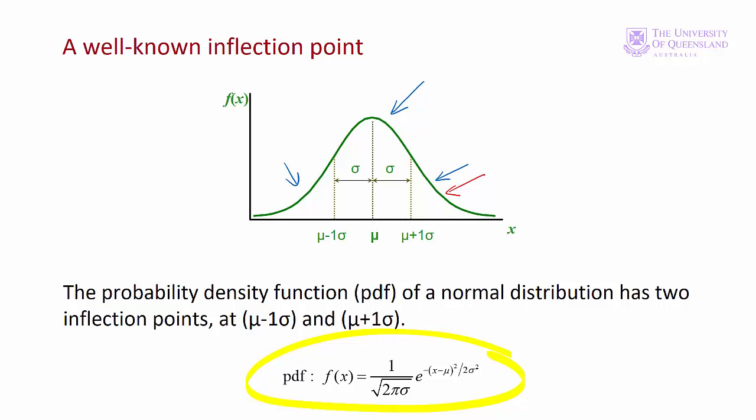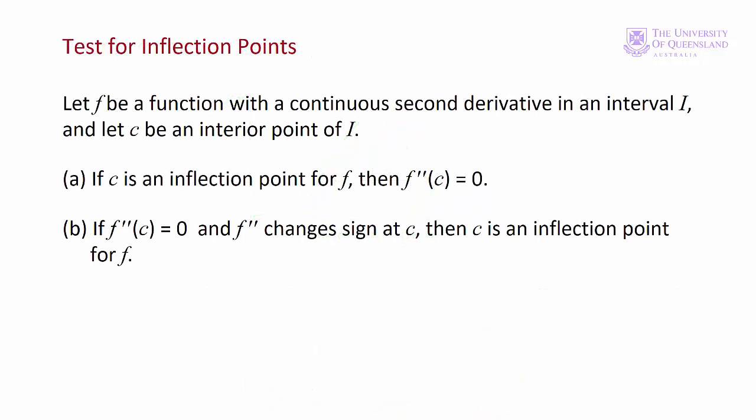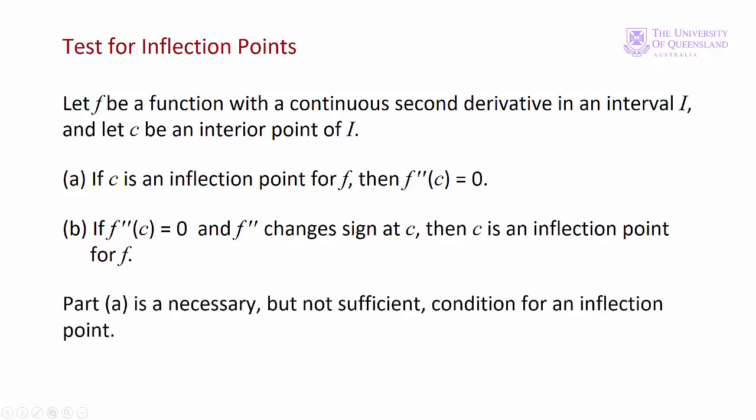Well, that's probably long enough to think about it. Let's see how we can test for an inflection point. To test for an inflection point, first we find the second derivative, and then we find any points where it's equal to zero — these are potential inflection points. We must also test whether the second derivative changes sign at this point. The second derivative equaling zero is a necessary but not sufficient condition for an inflection point.